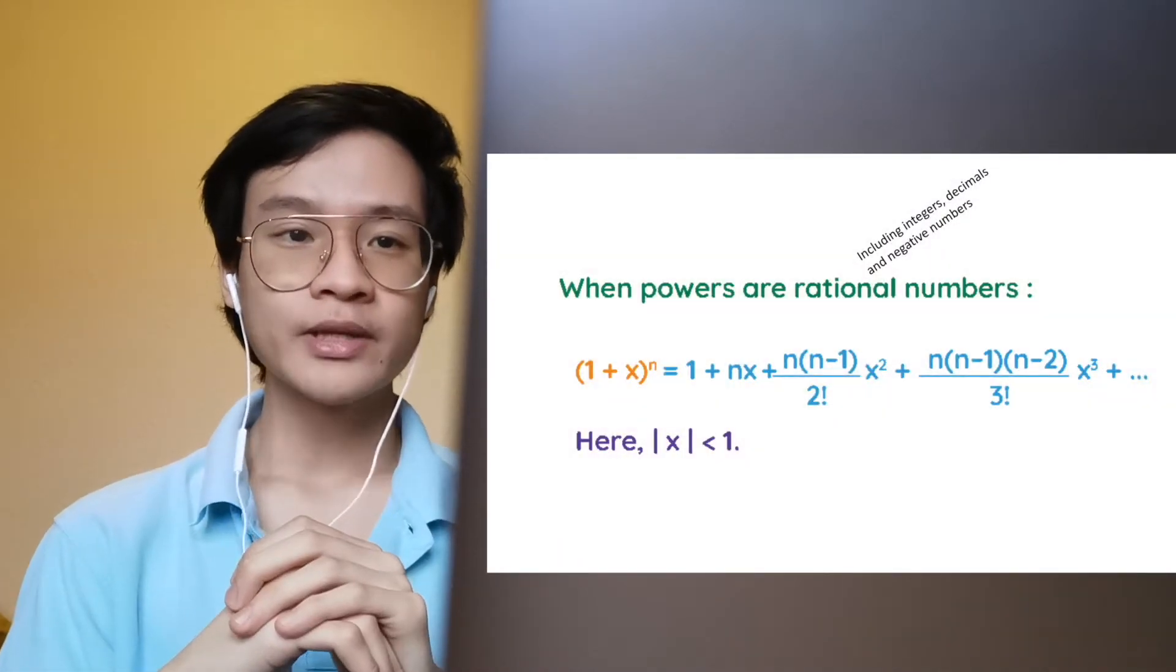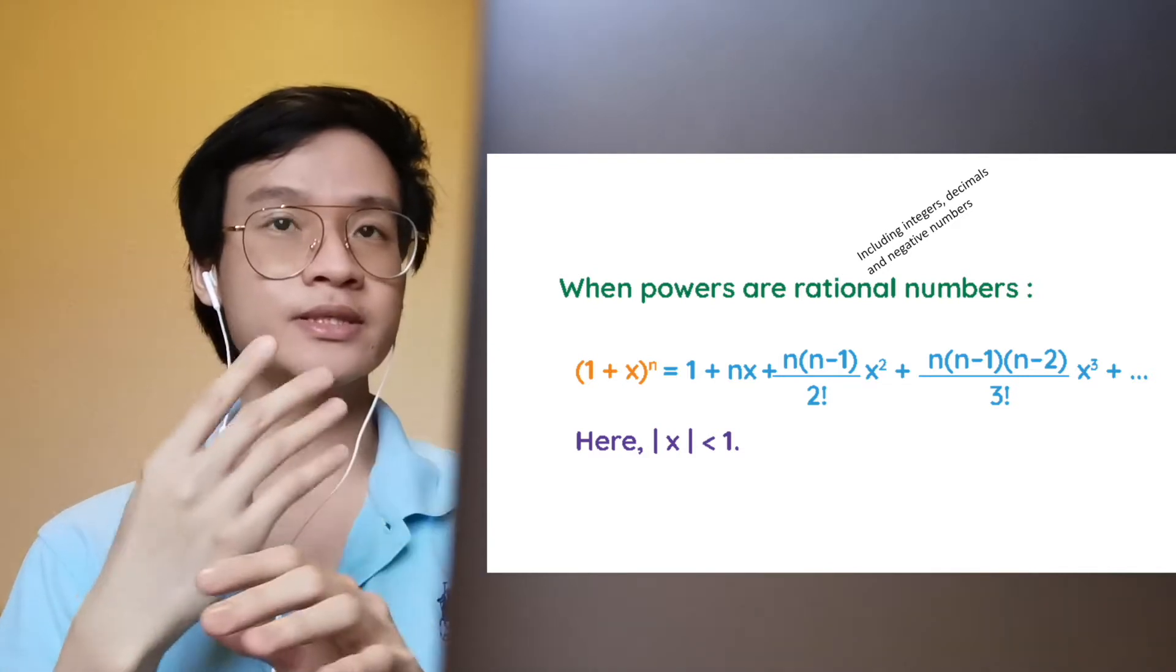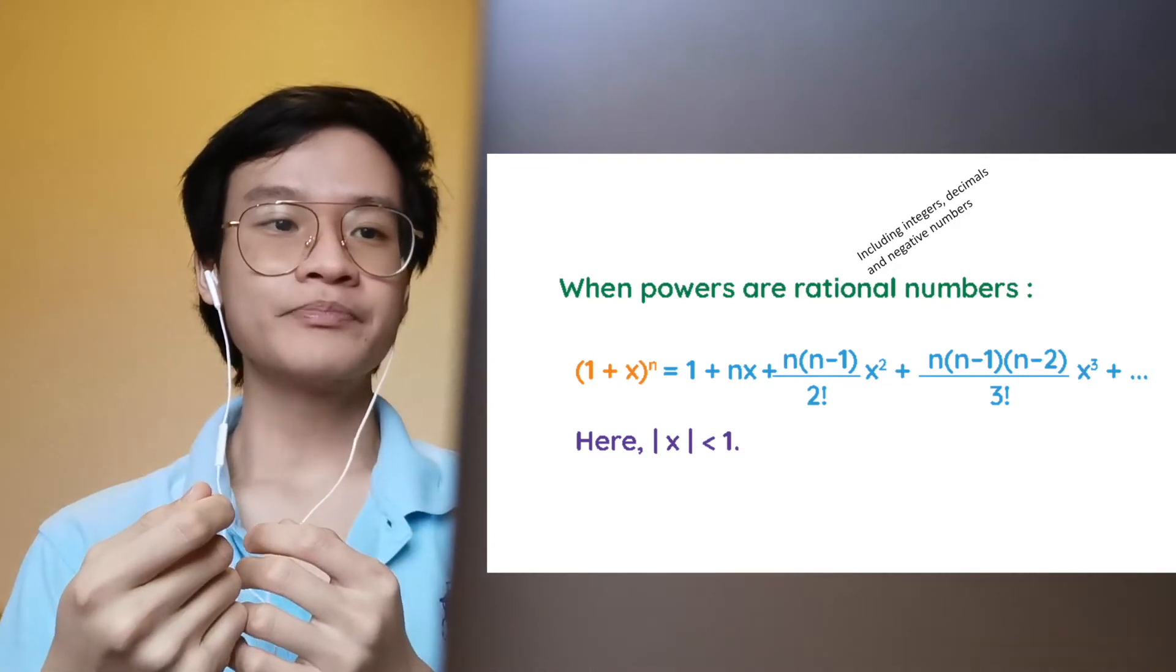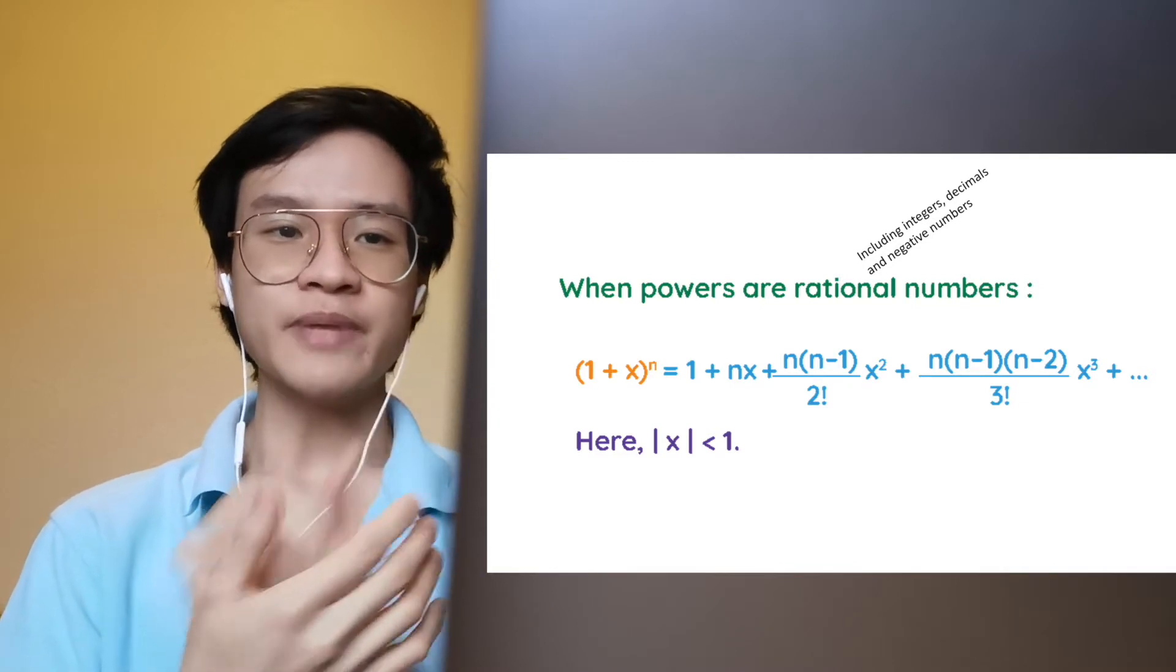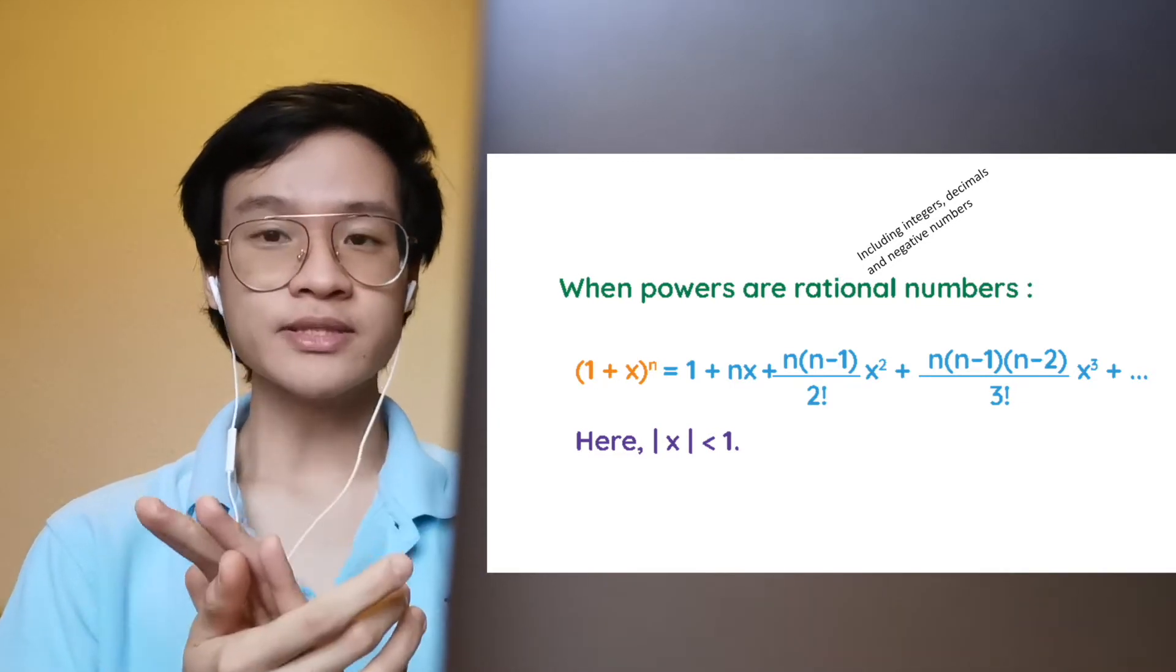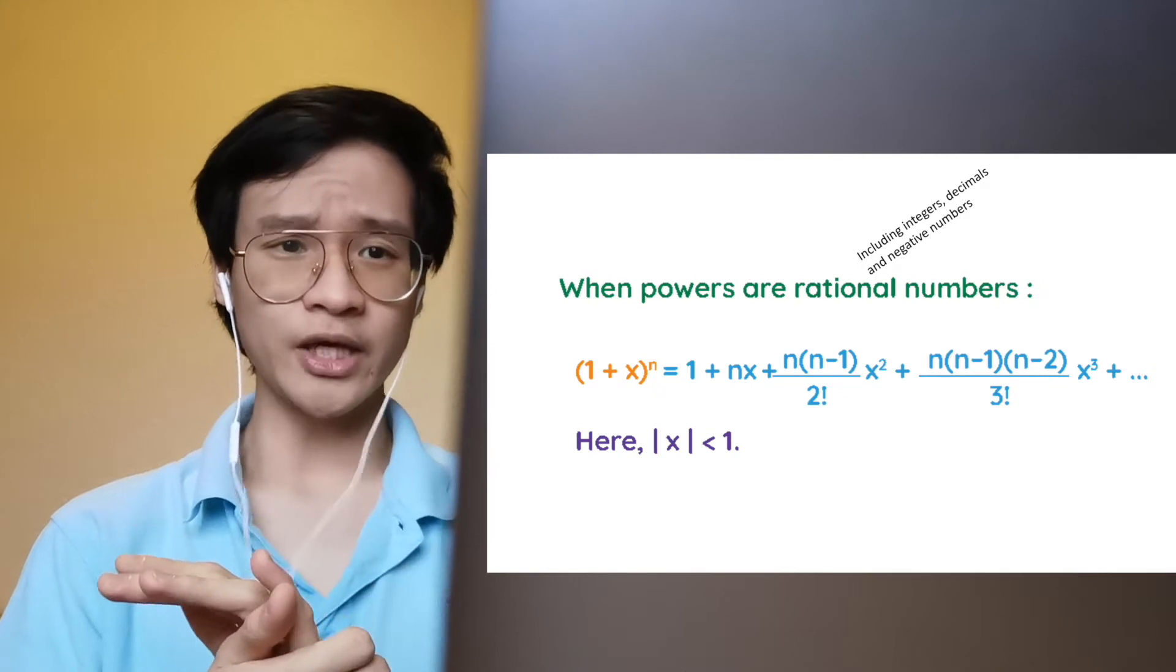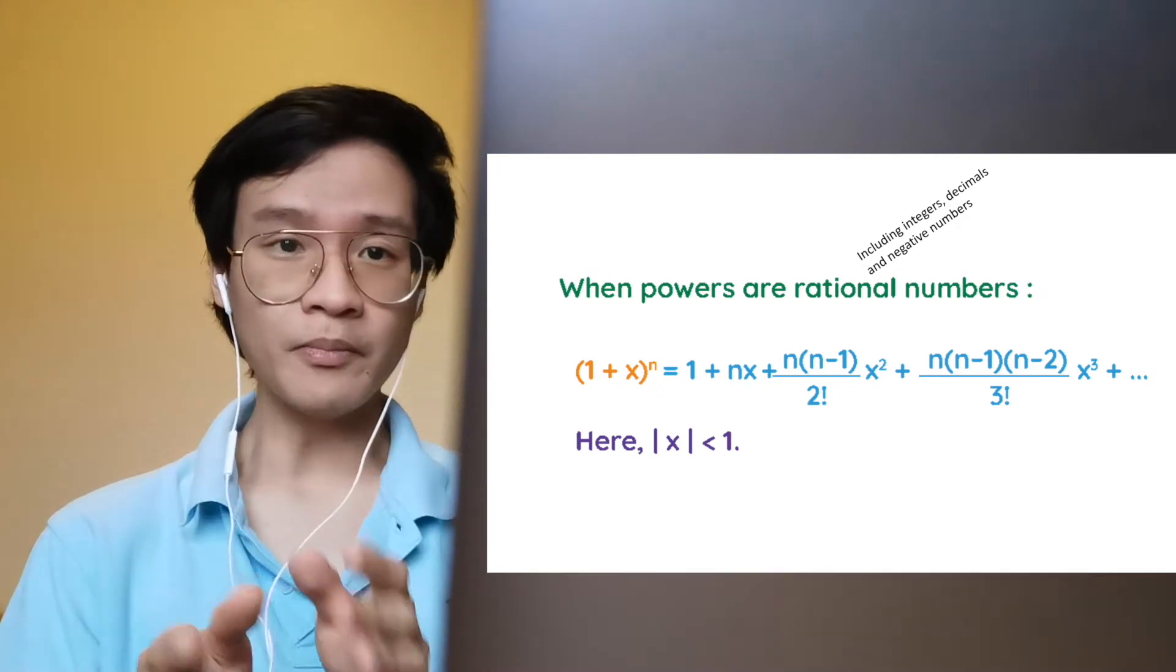You can see that each term has increased by one degree and it goes on and on up to infinity. This is because if you use decimals and negative values, the coefficient of your term will never hit zero.